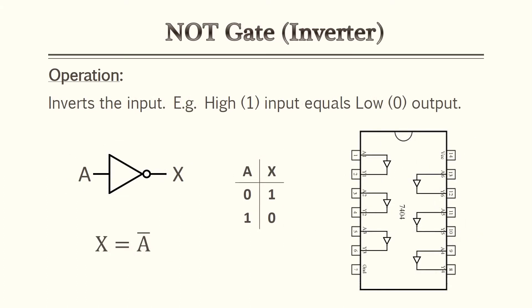This next gate is referred to as a NOT gate or an inverter. In practice problems and examples, I'll mostly refer to it as an inverter due to the fact that it inverts the input. If you have a high input, it will give you a low output and vice versa. In Boolean algebra, all it does is invert your input, so an A input gives you A-not. Very simple.